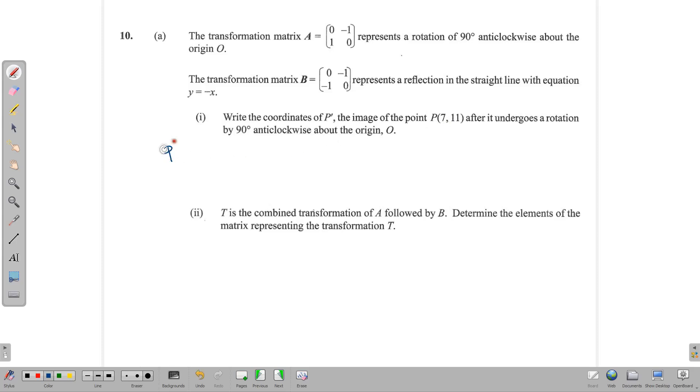We're going to use this matrix to find the image of this point. So P' is going to equal the matrix 0 negative 1, 1 0, and we multiply that by the point 7, 11 written as a column matrix. Multiplying row by column, we get 0 times 7 is 0, and negative 1 times 11 gives us negative 11. Second row: 1 times 7 is 7, and 0 times 11 is 0. So we get our point P' which is negative 11, 7.